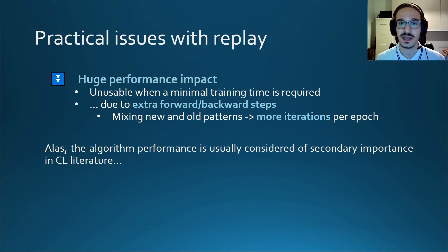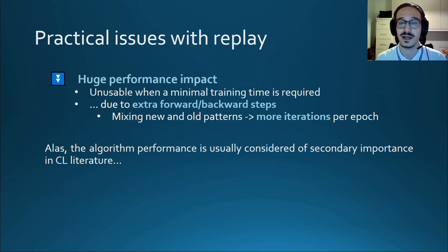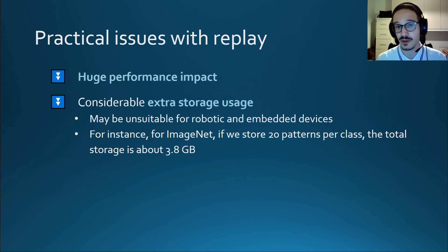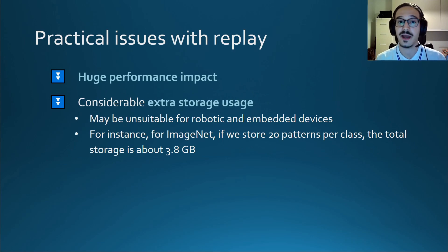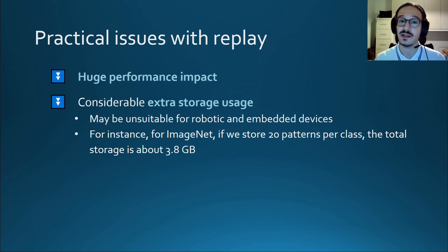However, replay has a huge performance impact. We have a lot of extra forward and backward passes to run during training because we have to train with many more patterns. This is usually not a problem in the continual learning literature, because algorithm performance is usually of secondary importance — accuracy is the most important scoring method. The second problem is storage usage: you need to store previous patterns in persistent memory, and usually the more patterns you store, the higher the accuracy result. Summing up, replay in its pure form is too inefficient for robotic applications, so we want to get the benefits while minimizing the negative aspects.